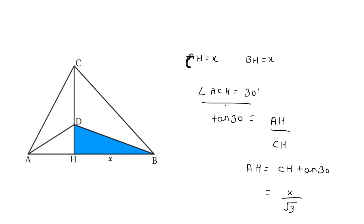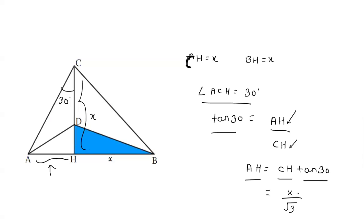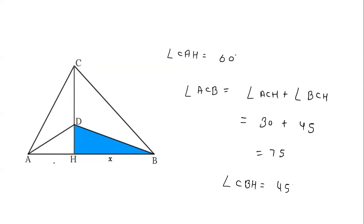Now consider angle ACH, which is given as 30 degrees. We can write tan 30 = AH divided by CH. AH = CH × tan 30. CH equals X and tan 30 = 1/√3, so AH = X/√3.